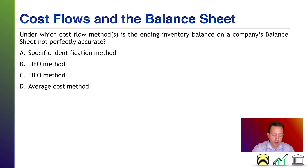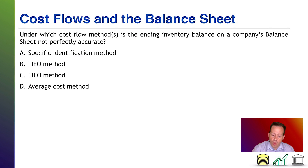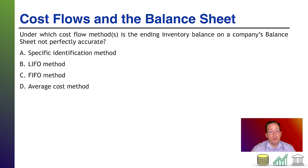First up: cost flows in the balance sheet. This is a simple multiple choice — under which cost flow method or methods is the ending inventory balance on a company's balance sheet not perfectly accurate? You have options A through D, our four typical cost flow methods. Pause the video, see if you can answer it, and come back when you're ready.